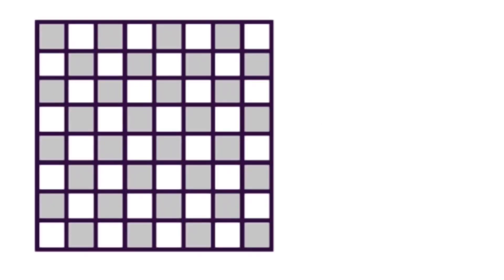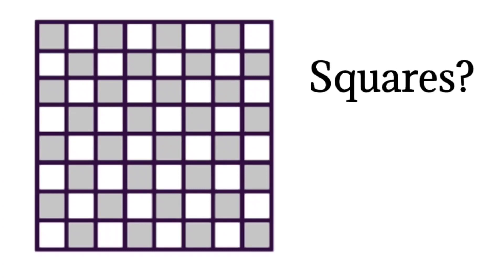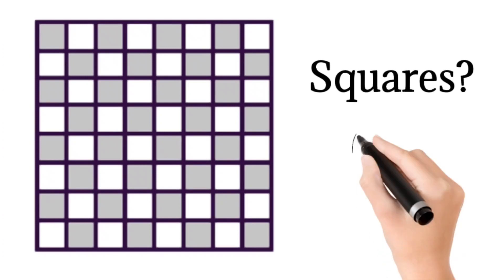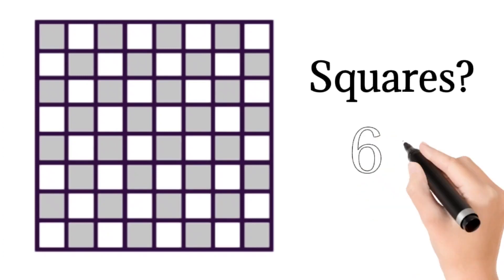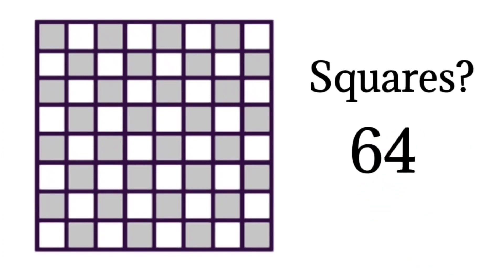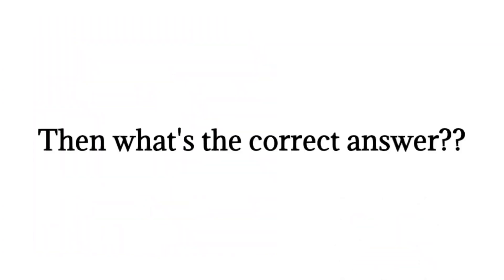This is the chessboard. If I ask you to find out the number of squares, and you say 64 squares, then that is a wrong answer. So what is the correct answer? Let us see.